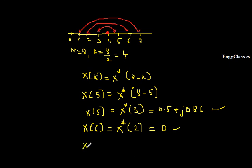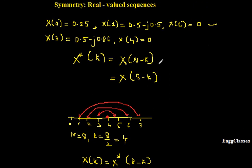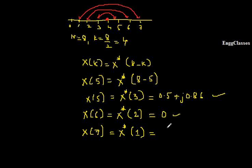The last remaining point is x(7). It will be x*(N minus k) = x*(8 minus 7) = x*(1). x(1) is given as 0.5 minus j0.5, so its conjugate x(7) becomes 0.5 plus j0.5.